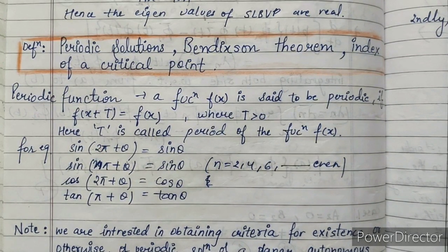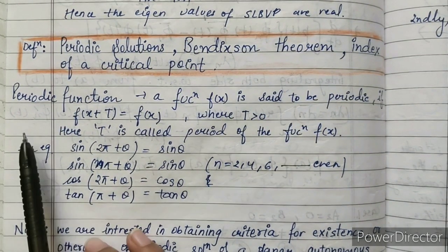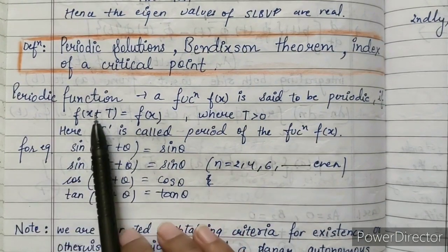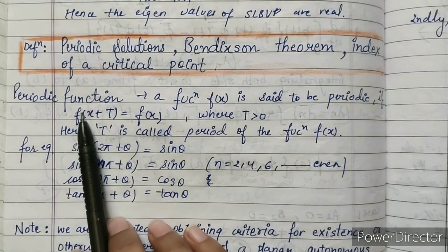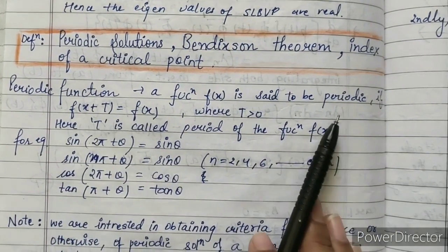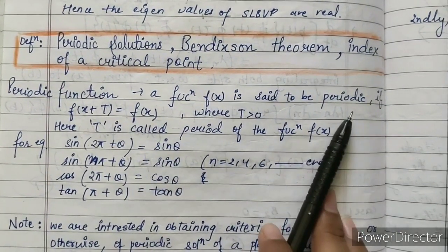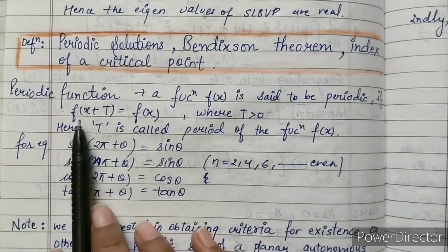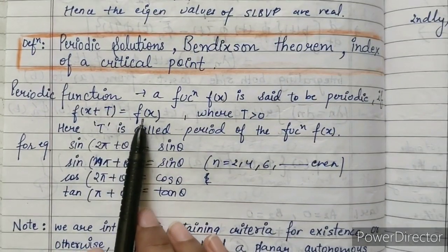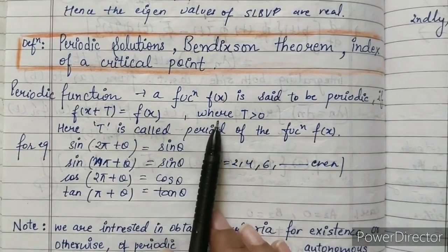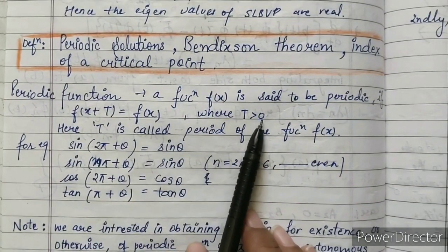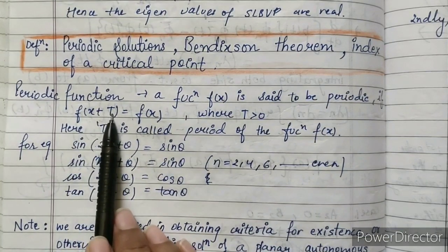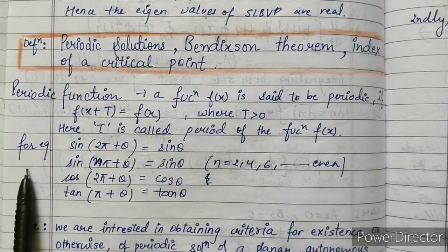Let us discuss what is a periodic function. The definition of a periodic function is: a function f(x) is said to be periodic if f(x + T) equals f(x), where T is greater than zero. Here, T is called the period of the function f(x).